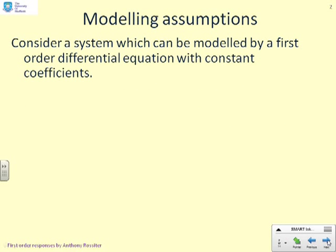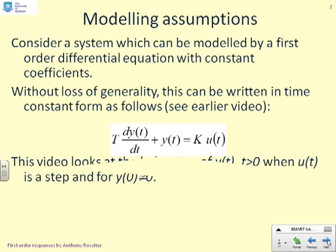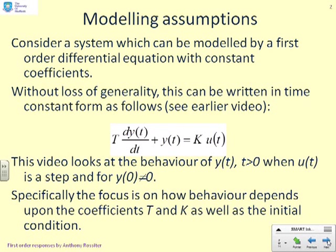First, a reminder of some of the things that were said in the first two videos. We're going to consider a system which can be modeled by a first-order differential equation with constant coefficients. Without loss of generality, this can be written in the following form: T dy/dt plus y(t) equals K u(t). What we want to look at is how does y(t) behave for positive time when u(t) is a step and the initial condition y(0) is not equal to zero. We want to look at how the behavior depends upon the coefficients T and K, because these are the only two parameters in this particular model.